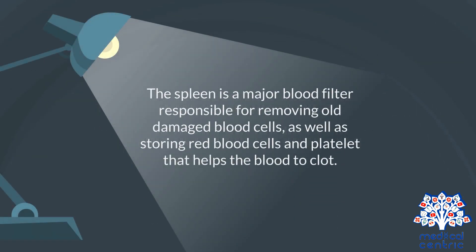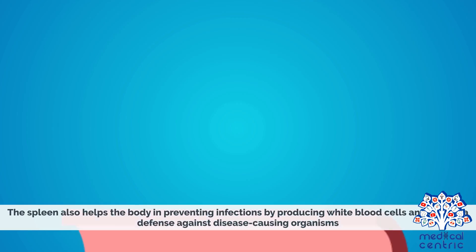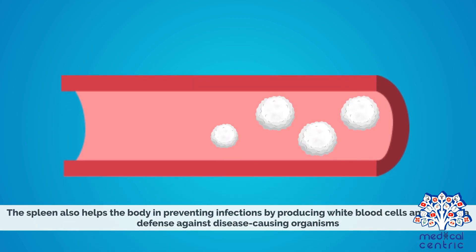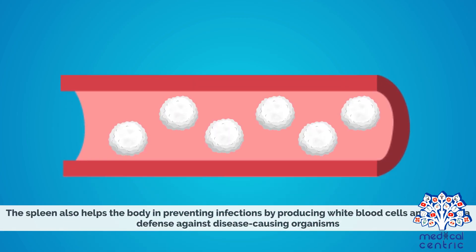The spleen is a major blood filter, responsible for removing old and damaged blood cells, as well as storing red blood cells and platelets that help the blood to clot. The spleen also helps the body in preventing infections by producing white blood cells and acts as a defense against disease-causing organisms.